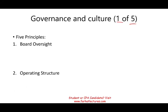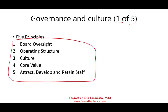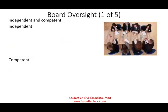Looking at board oversight: the board is the group selected by the shareholders to run the company. Their job is oversight — making sure the company is running well. To do that, the board of directors must be independent and competent, because they're going to be managing the company and managing risk.